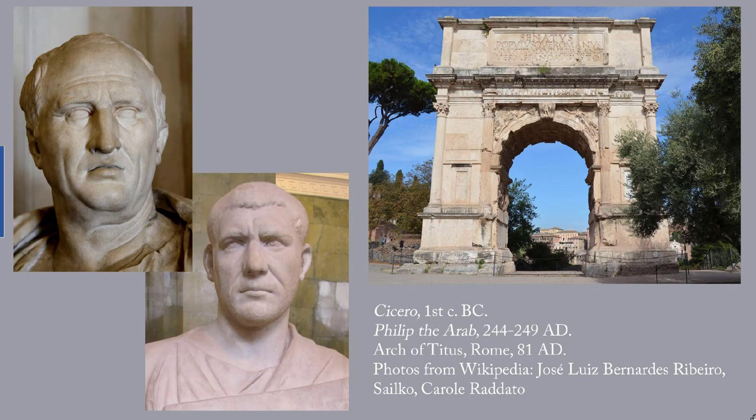A couple more examples of Roman sculpture: on the far left is Cicero, who lived in the first century BC — one of the great orators and politicians of the late Roman Republic. On the right is the Arch of Titus, 81 AD, which has relief scenes showing the Emperor's accomplishments. In the center is Philip the Arab, who ruled 244 to 249 AD. He succeeded a murdered Emperor and was in his turn murdered, which perhaps explains the look on his face.